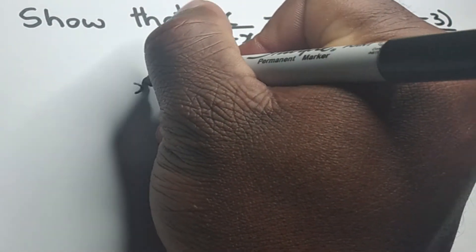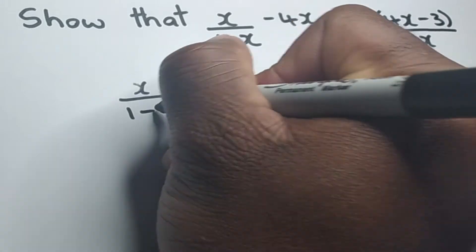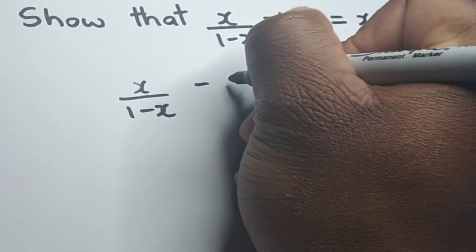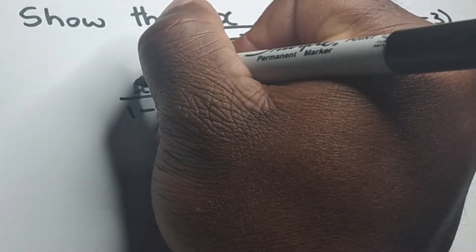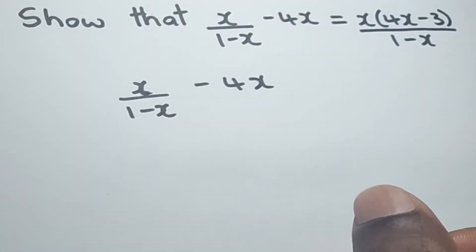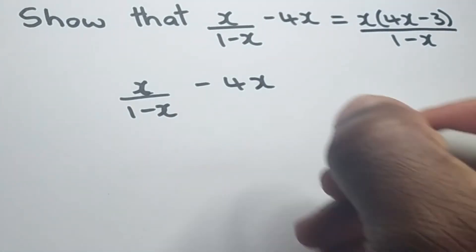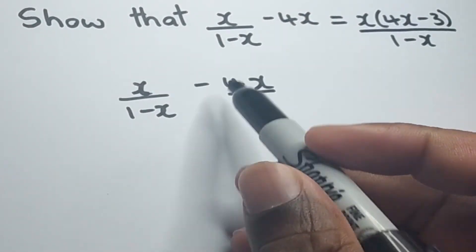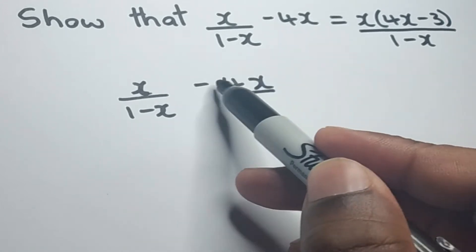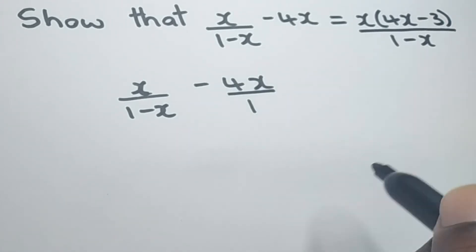So we're going to start off with x over 1-x minus 4x. So let's see what we'll get when we treat with this thing. So the first thing that we could do is to put negative 4x over 1. So negative 4x is the same thing as negative 4x over 1.